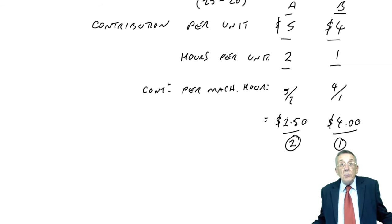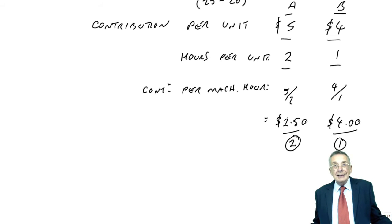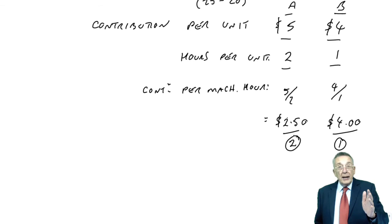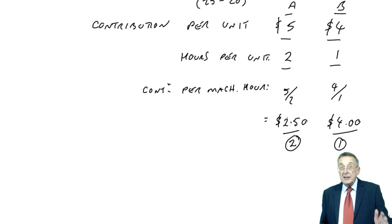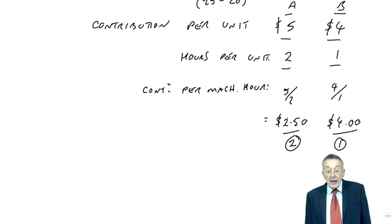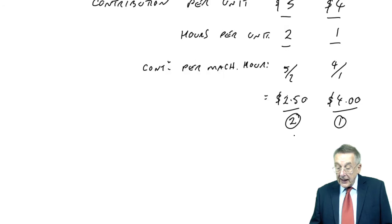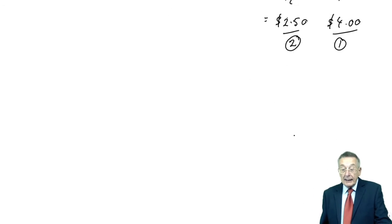Here we've only two products, it wouldn't matter how many products there were. Three, four, however many. We'd work out the contribution per unit of the limited resource, contribution per machine hour. And we'd rank them in the order of contribution per hour. Well, now we can decide on our optimal production plan.